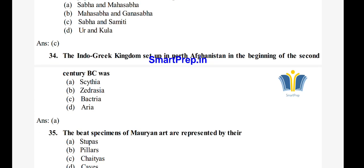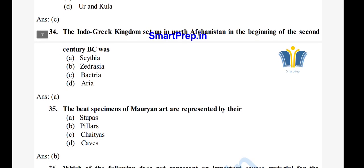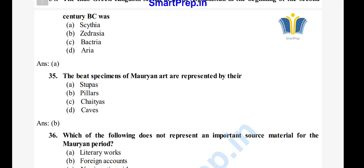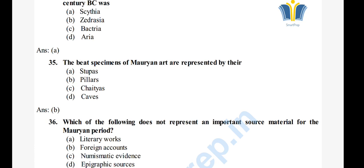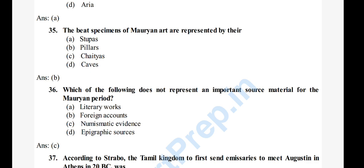Question 35: The Mauryan specimen of art is represented by their stupas and pillars. The right answer is option B, pillars. Mauryan art is recognized and represented by pillars. Question 36: Which of the following does not represent an important source material for Mauryan law? Options: A) literary works, B) foreign accounts, C) numismatic evidence, D) epigraphic sources. The right answer is option C, numismatic evidence.